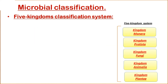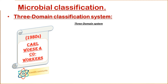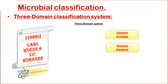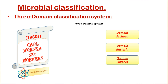The five-kingdom system was modified further into a three-domain system by Carl Woese and his co-workers in the 1980s. This system is based on contemporary techniques in molecular biology and biochemistry. The three-domain system describes three domains: Domain Archaea, Domain Bacteria, and Domain Eukarya. In the five-kingdom system, bacteria and archaea were placed together in Kingdom Monera, but in the three-domain system, they are separated into two distinct domains: Domain Bacteria and Domain Archaea.